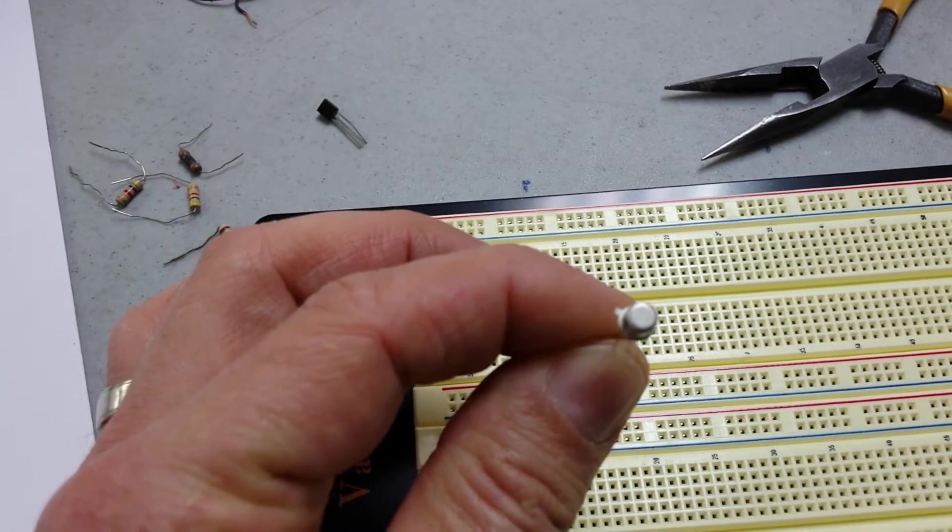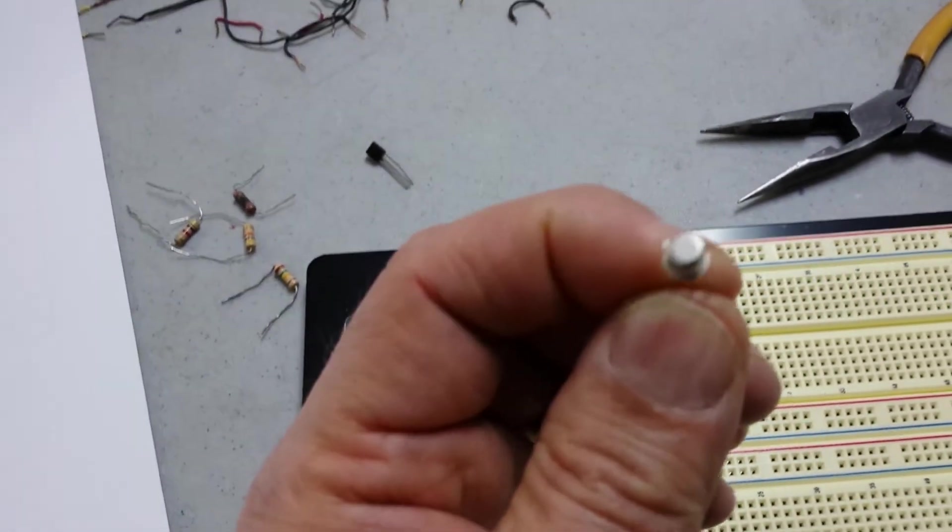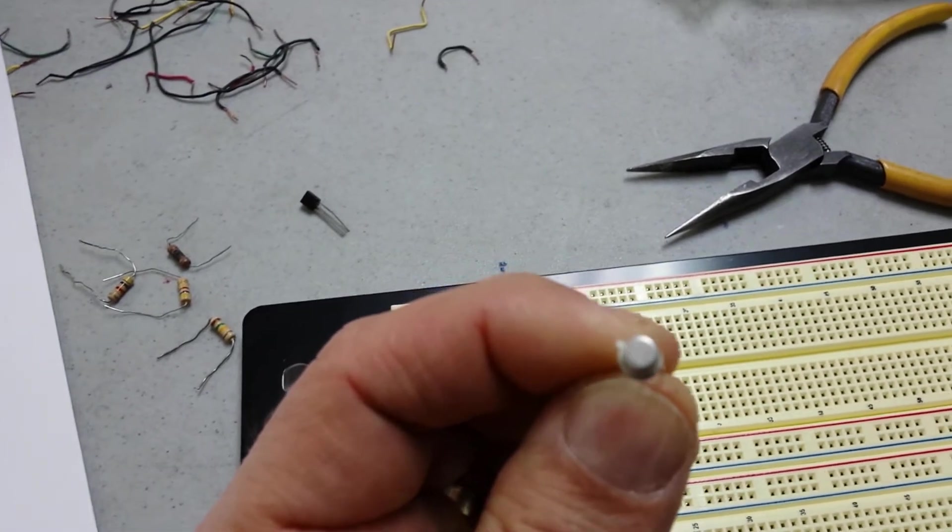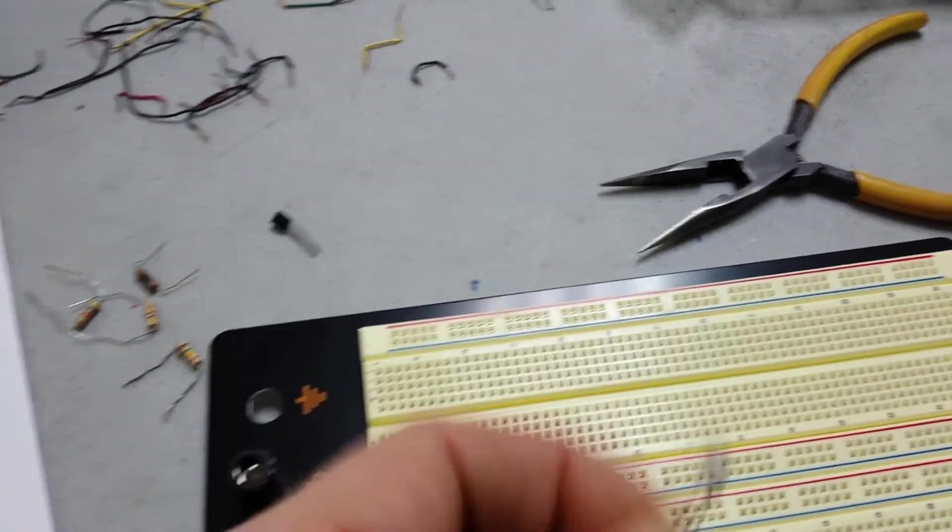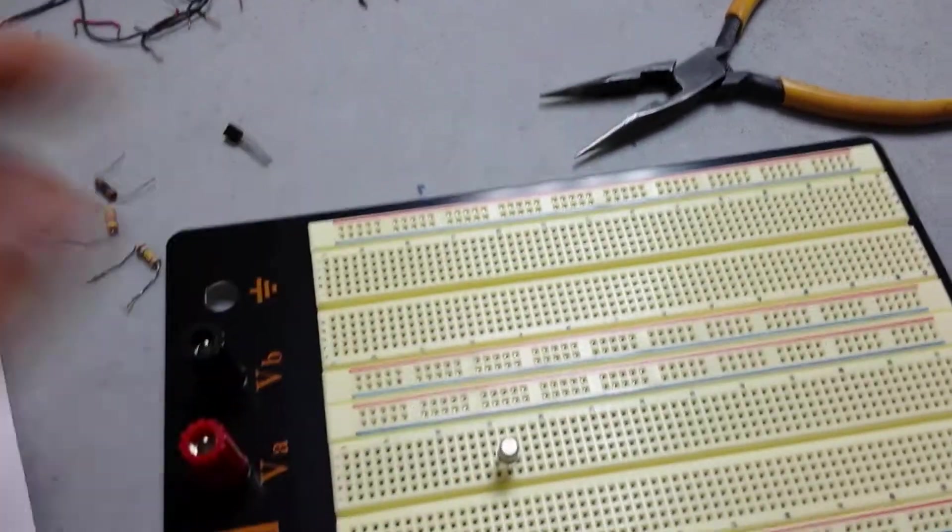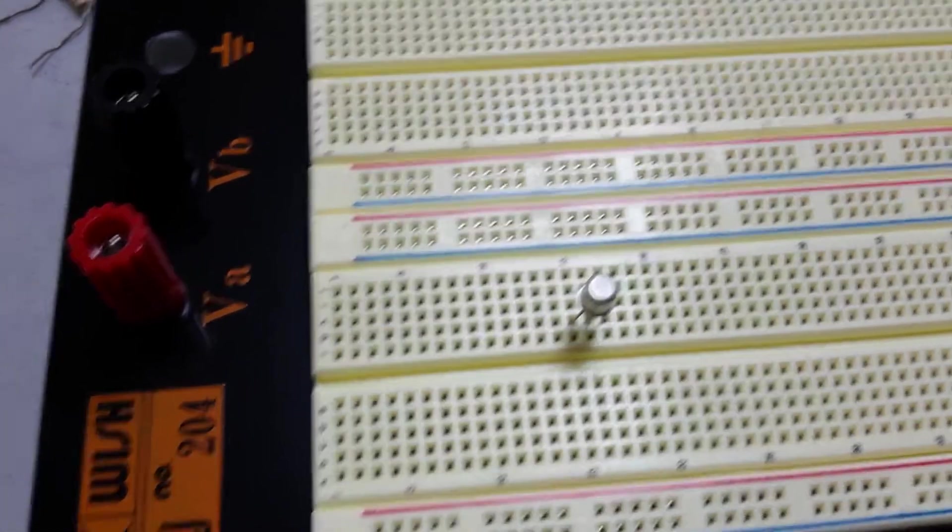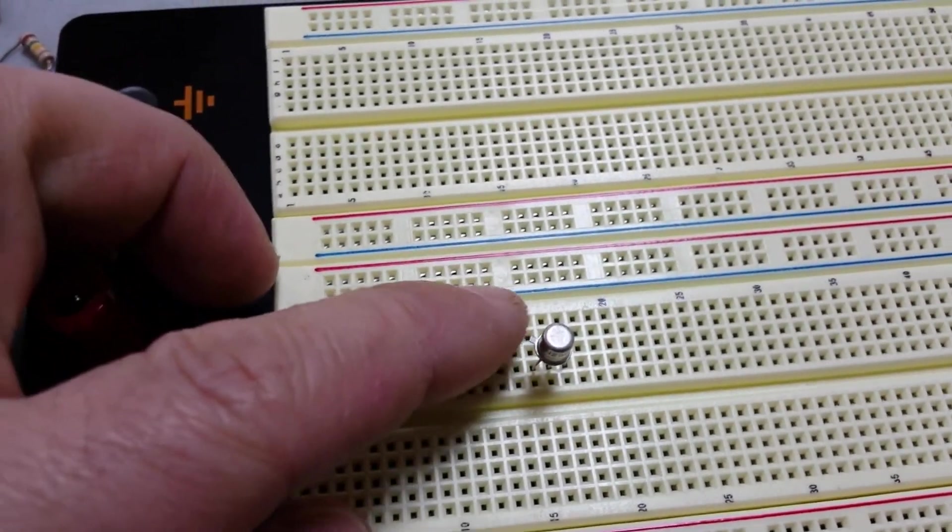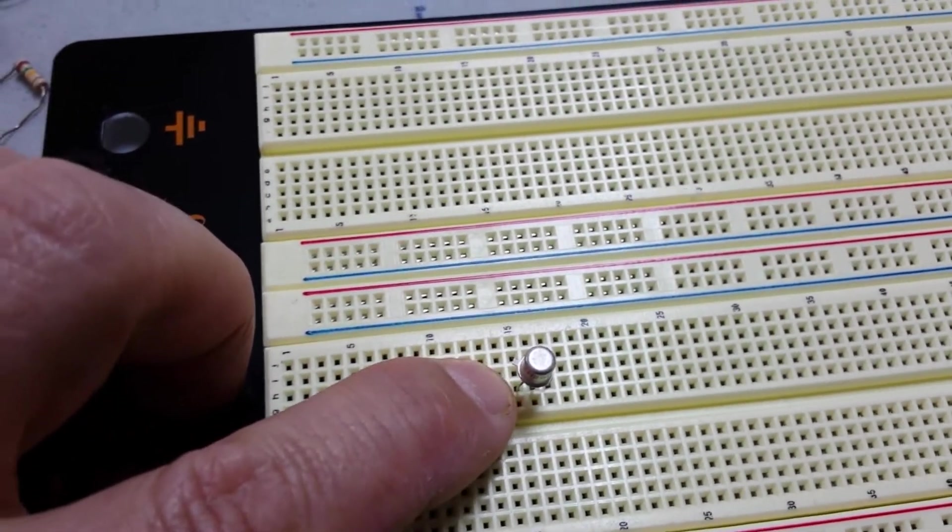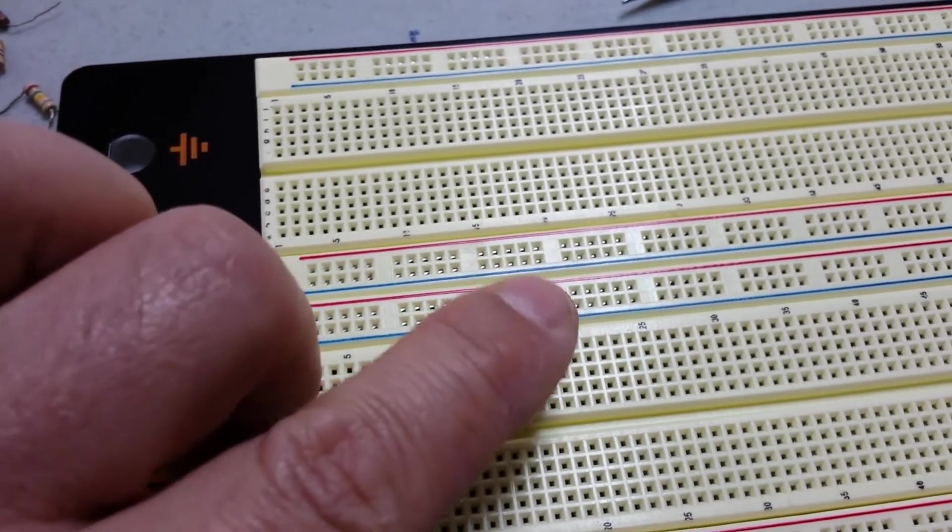So what I'll do now is I'll take the 2N2222. If you've noticed, the little protruding part is on the left-hand side. I'll take it. I'll position it. So just to get a closer look, you'll have the protruding part on the left, which means that the pin right here is the emitter, followed by the base in the center and the collector.